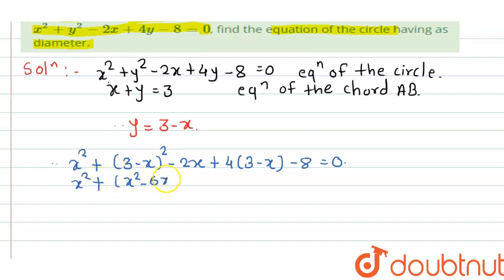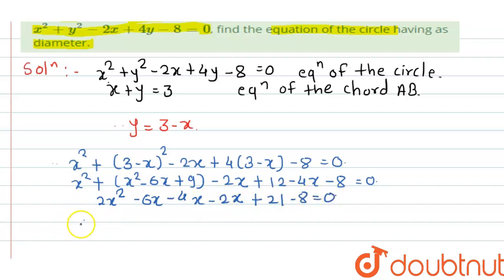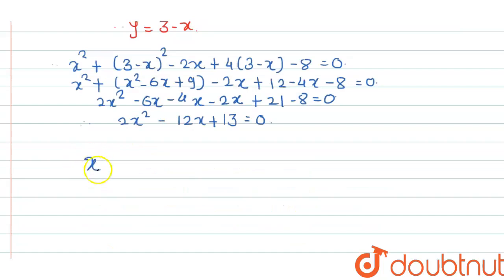Simplifying all terms, we get 2x² - 6x + 9 - 2x + 12 - 4x - 8 = 0, which simplifies to 2x² - 12x + 13 = 0. This gives us a quadratic equation.